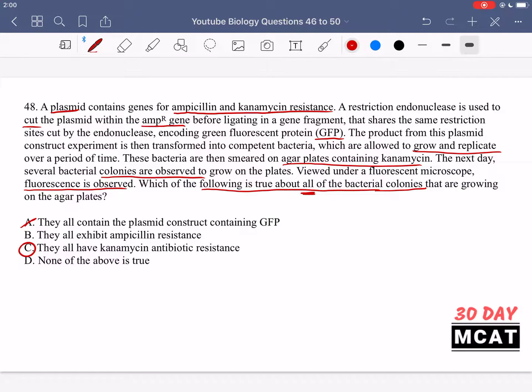We can't say option A that they all contain the plasmid construct containing GFP, because what we did is we took a plasmid, and we tried to alter it so that we get rid of the ampicillin resistance gene, and add in GFP, but we used restriction endonucleus, and we tried to add in a new gene, but it's possible that we might still have some of the original plasmid left over. And so when we give this plasmid to our bacterial colony, some of them might have uptaken the original plasmid. So we can't definitively say that they all contain the plasmid construct which contains GFP. Some of them might have taken up the original one, and that would still allow them to be resistant to canamycin.